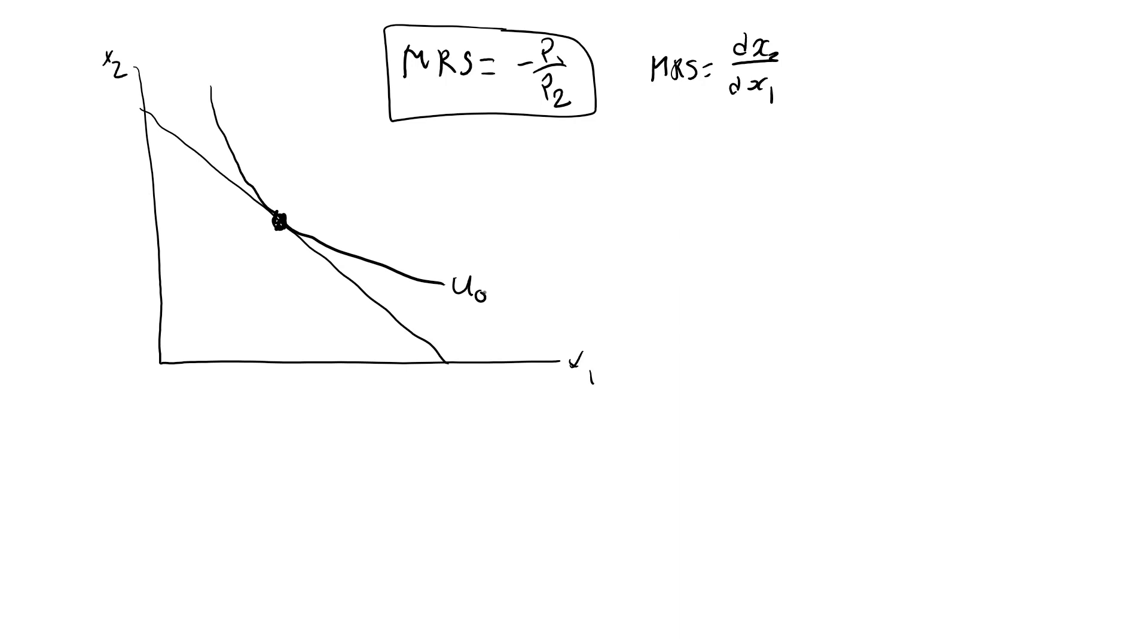by maximizing utility, we guarantee that she will reach the best possible indifference curve. So mathematically, she would like to maximize u of x1, x2.